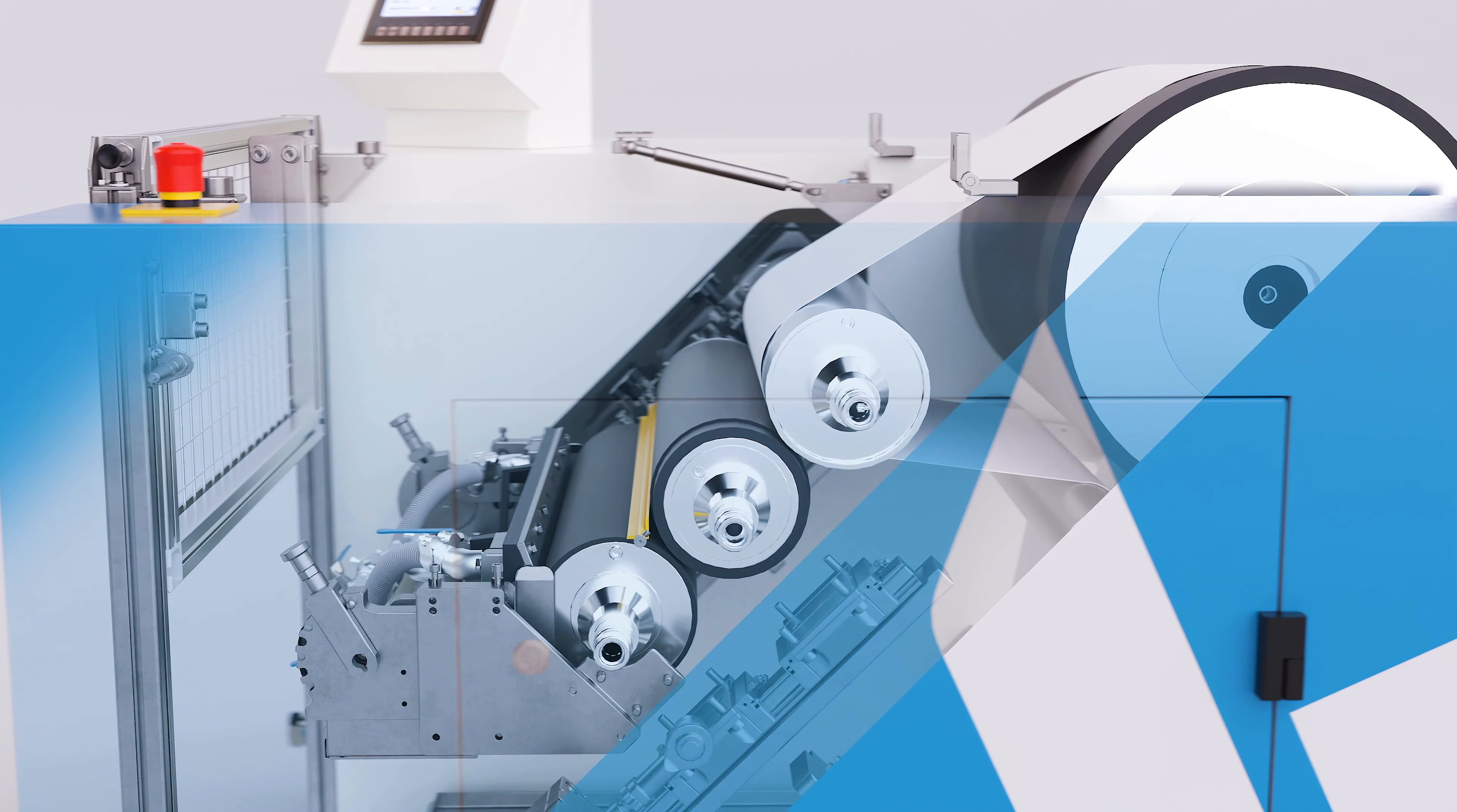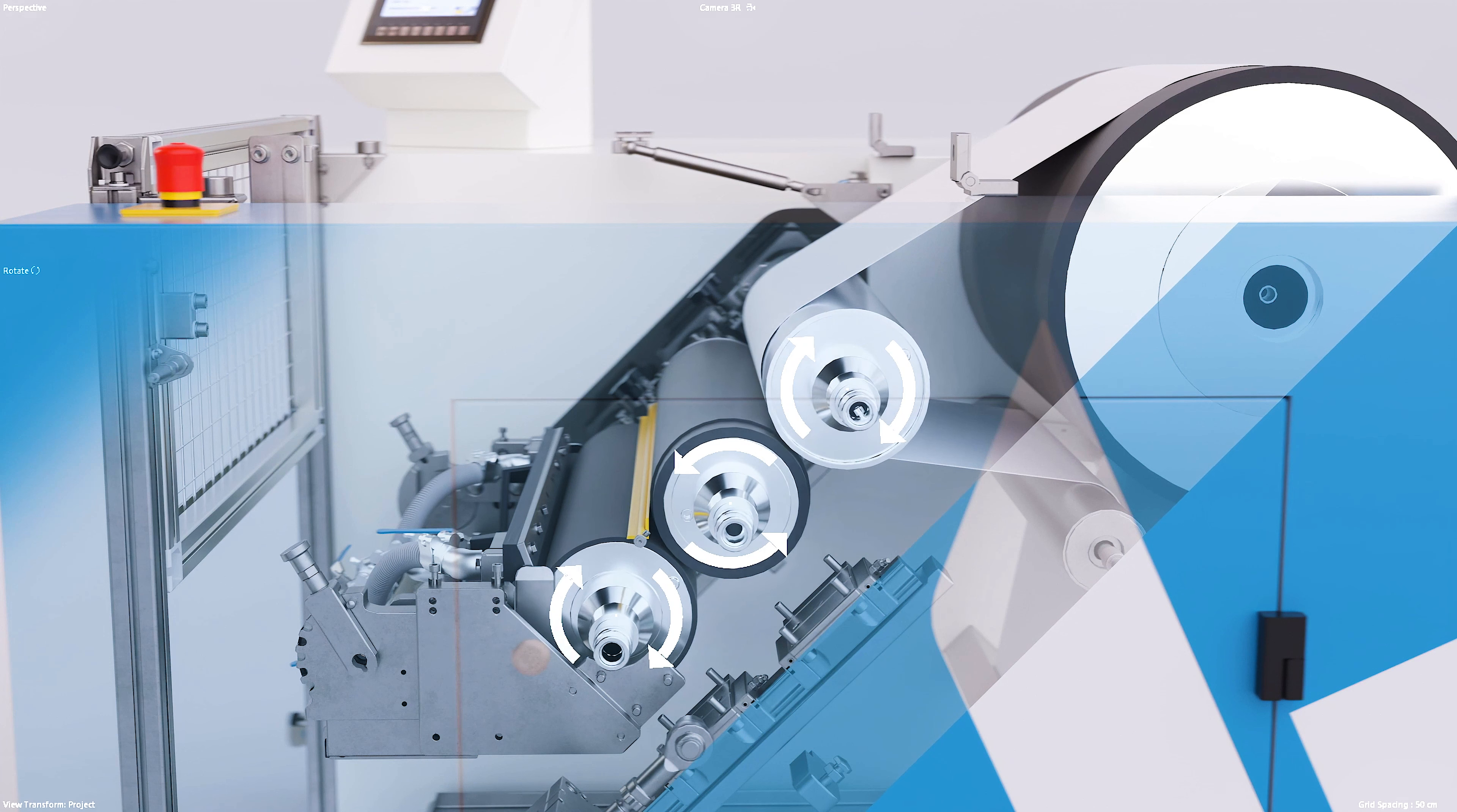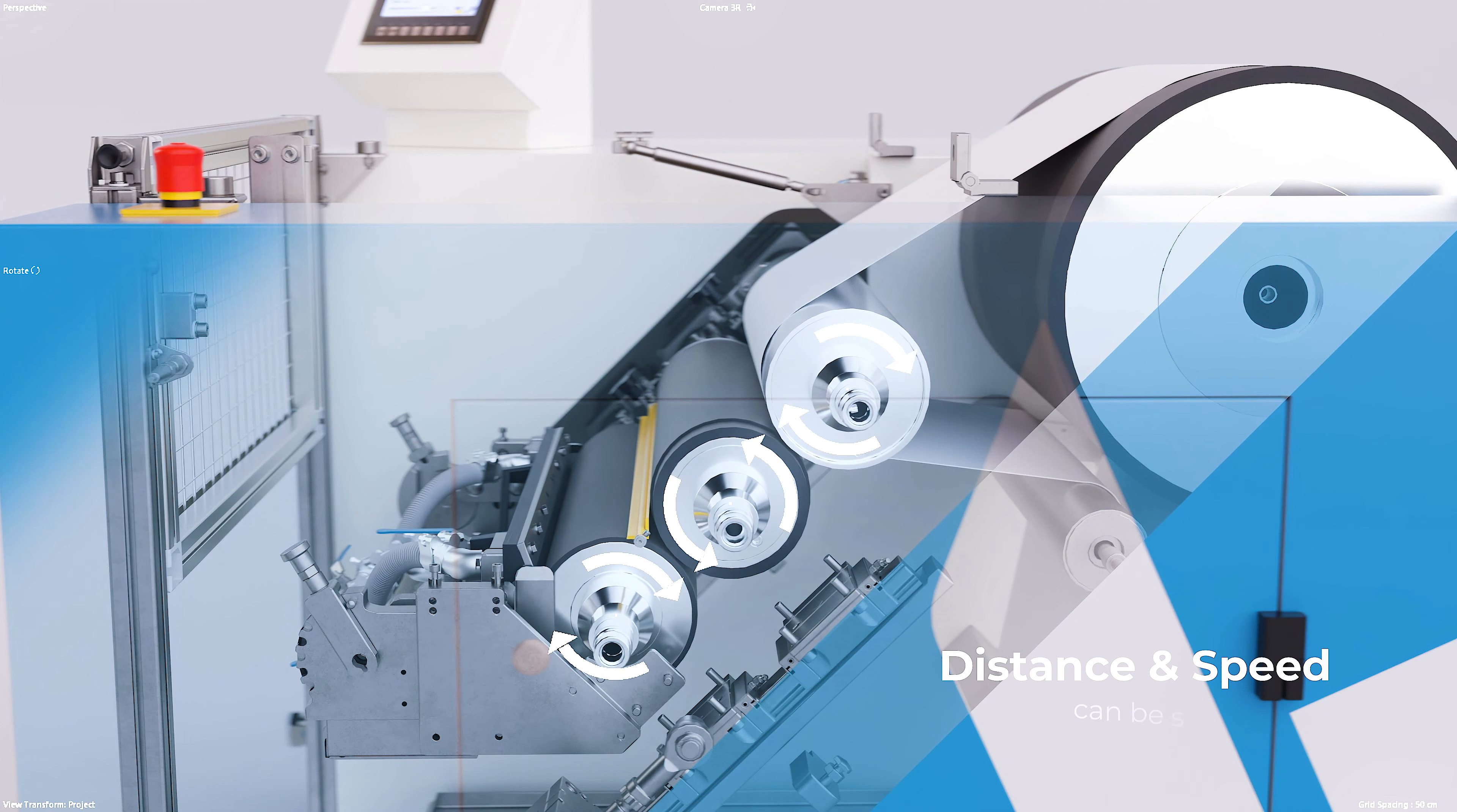The silicone coating station is equipped with three rollers as standard. The distance and the speed of the three rollers can be set individually.